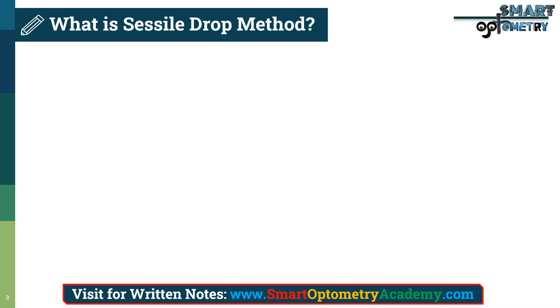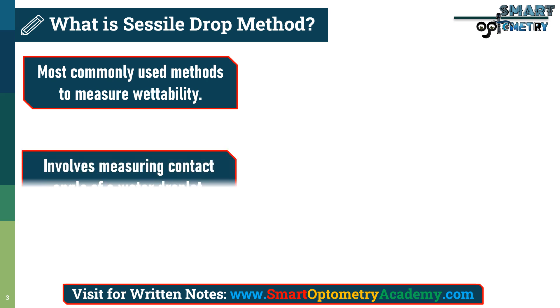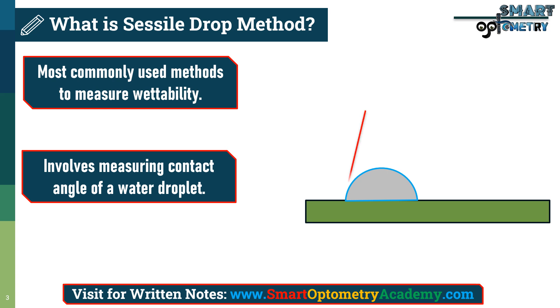What is Sessile Drop Method? One of the most commonly used methods to measure wettability is the Sessile Drop Method. This technique involves measuring the contact angle of a water droplet on the material's surface.